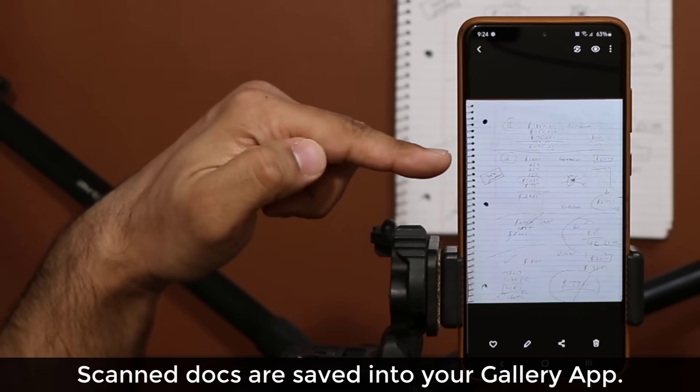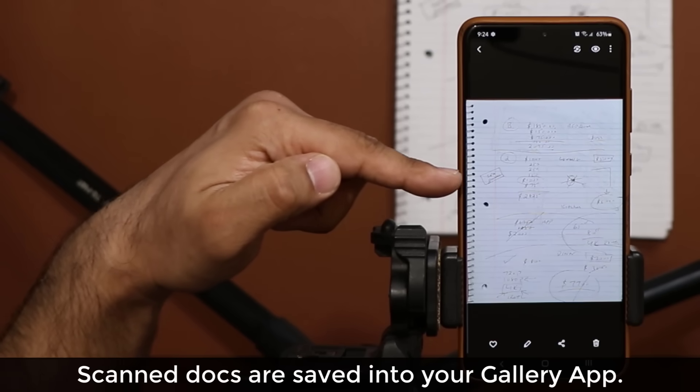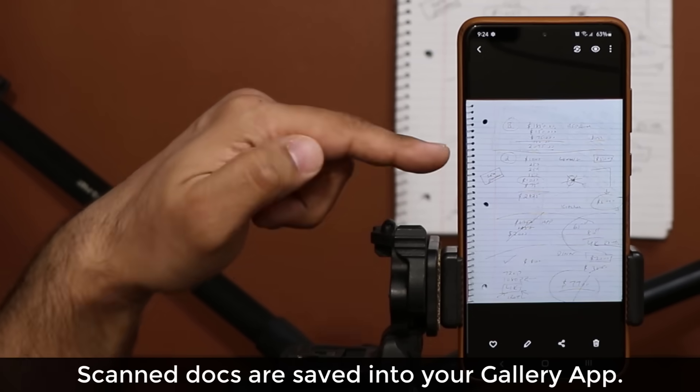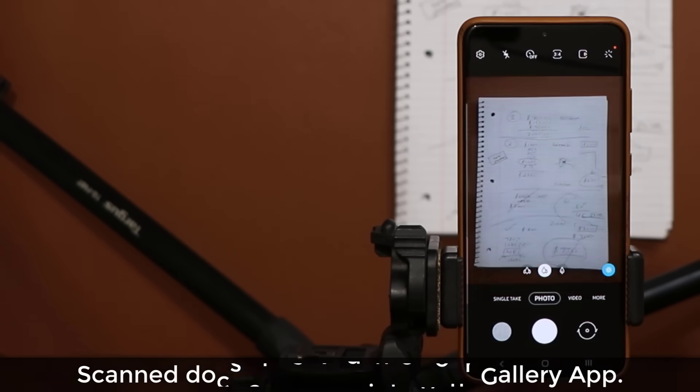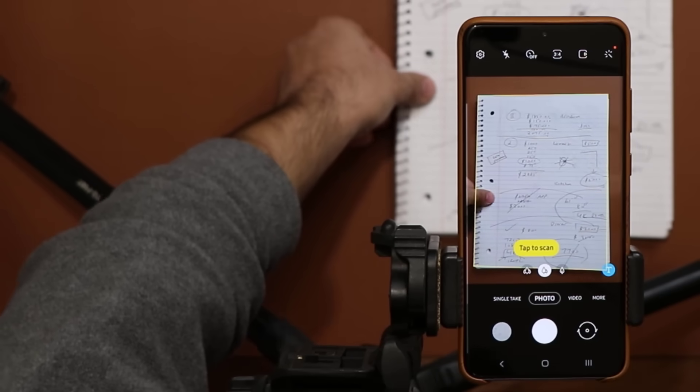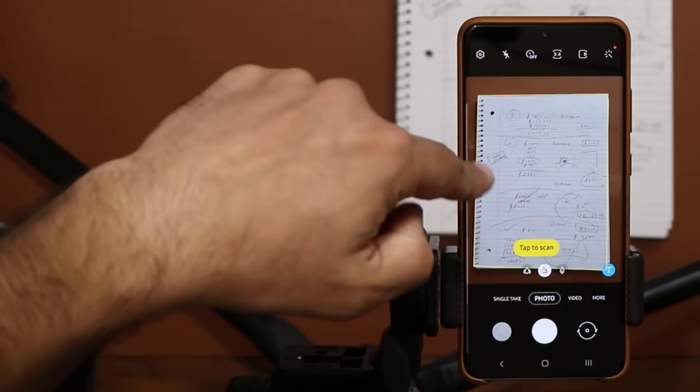And if I go into my gallery this is what it's going to look like. Now let me show you one more example. I'm going to grab this thing over here. I'm going to take it out of the way. Look how quick it is to recognize text and tap to scan.